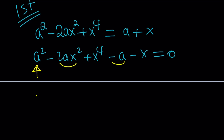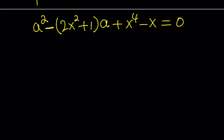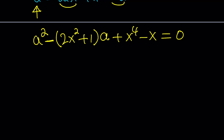We're going to put these terms together. So we have a squared. The coefficient of 'a' is what you need to focus on: negative 2x squared and minus 1. So we put a minus sign and write it as 2x squared plus 1, all multiplied by 'a'. Notice that there's a negation here which makes both of these negative. And then x to the fourth minus x is going to be a constant with respect to 'a'. This is our quadratic. Let's go ahead and solve this using the quadratic formula.